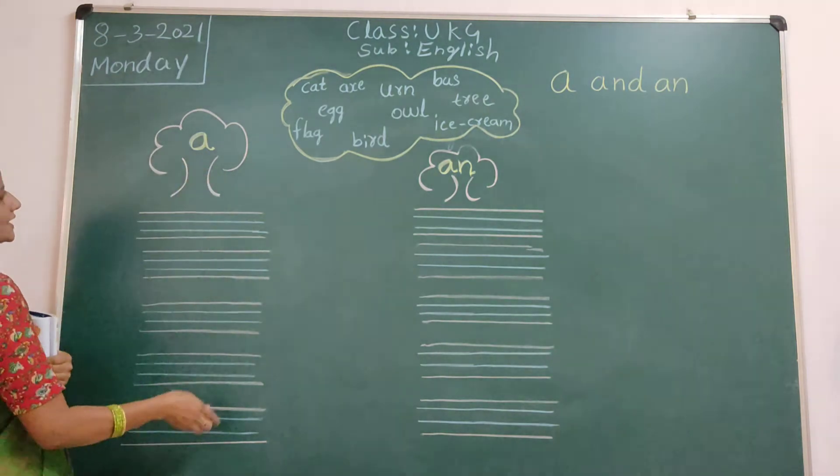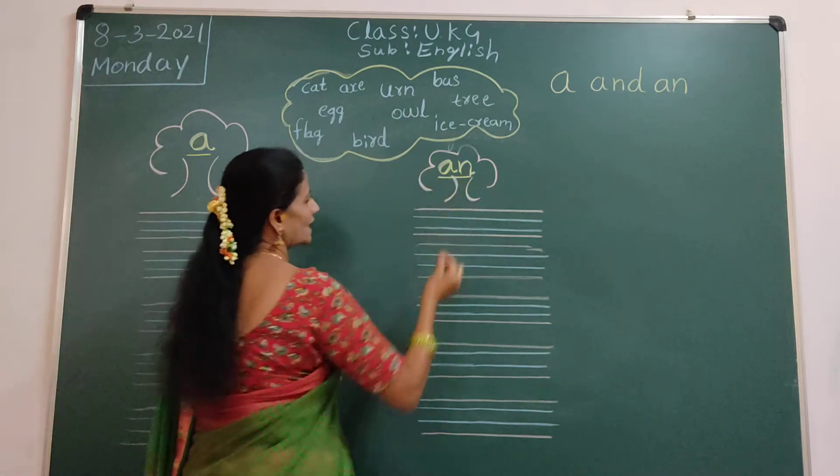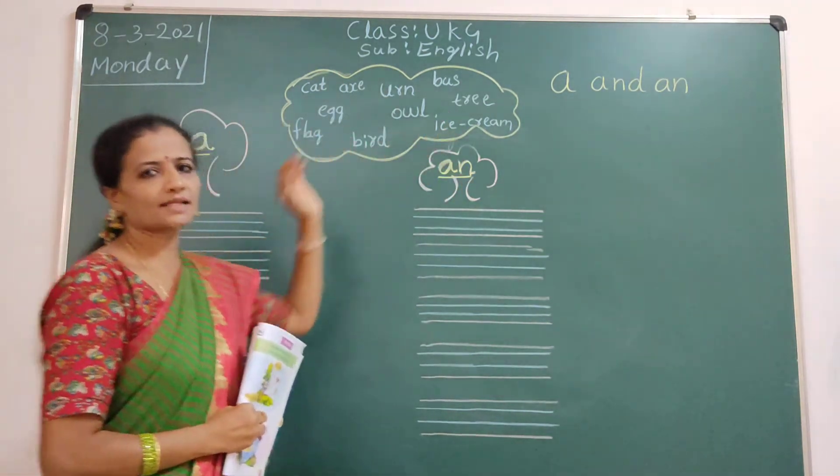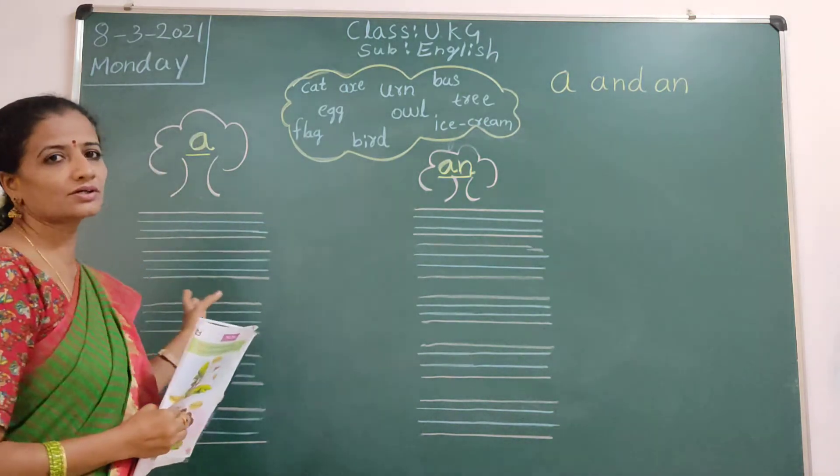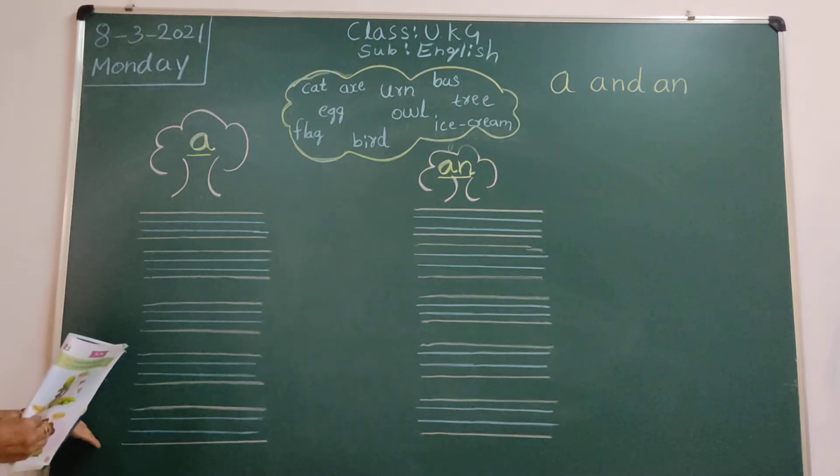See here. A. What is this? A. See, what is this? An. A and An. So, here some words are there. We will shuffle. Okay. First, we will write A words. Okay, children.